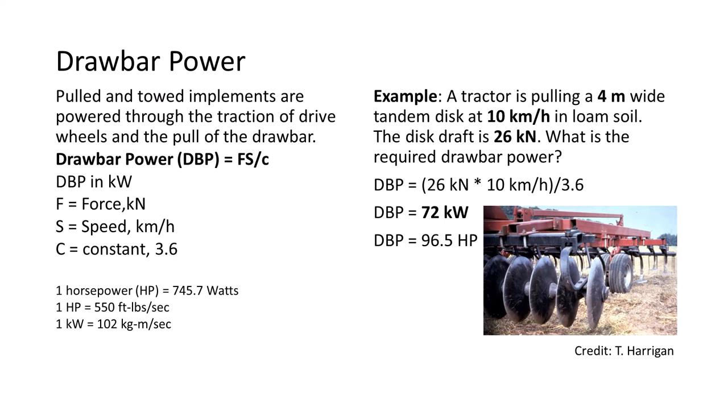In English units, 0.746 kW equals 1 horsepower. By dividing 72 kW by 0.746 kW, we see that the equivalent drawbar power in English units is 96.5 horsepower.